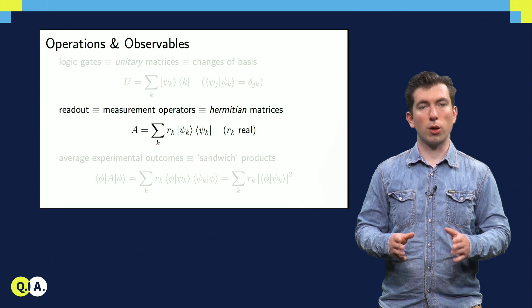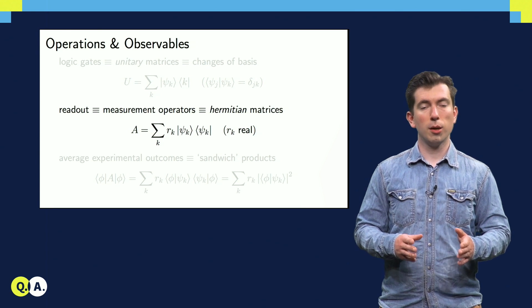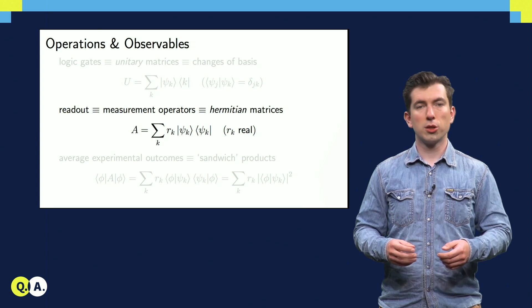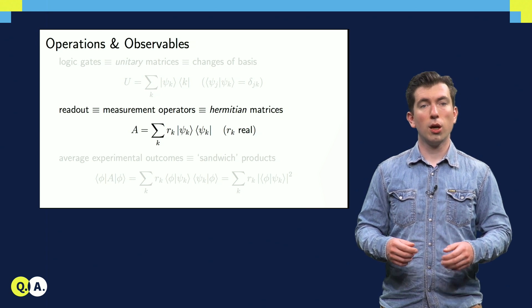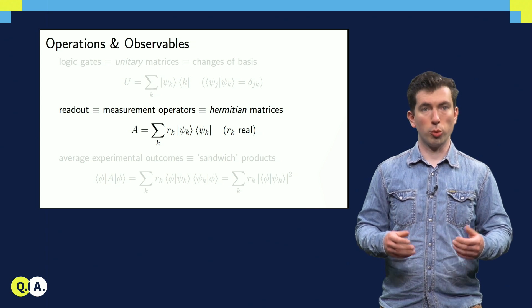Probabilistic measurements are also described by matrices, but these matrices are Hermitian, so in ket notation, there are just weighted sums of these ket bra terms where the psi_k states form an orthonormal basis for the space.